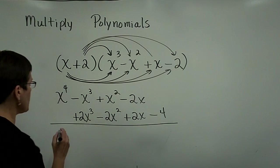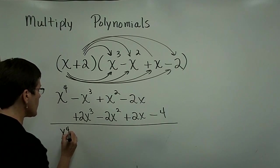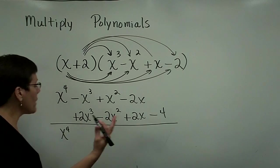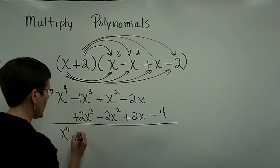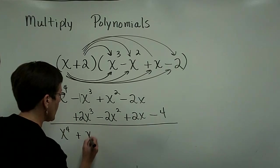I'll collect my like terms now. x to the fourth is the highest degree in the polynomial. Therefore, the degree of my answer will be a 4. This one's got a negative 1 plus 2 is a positive 1x cubed.